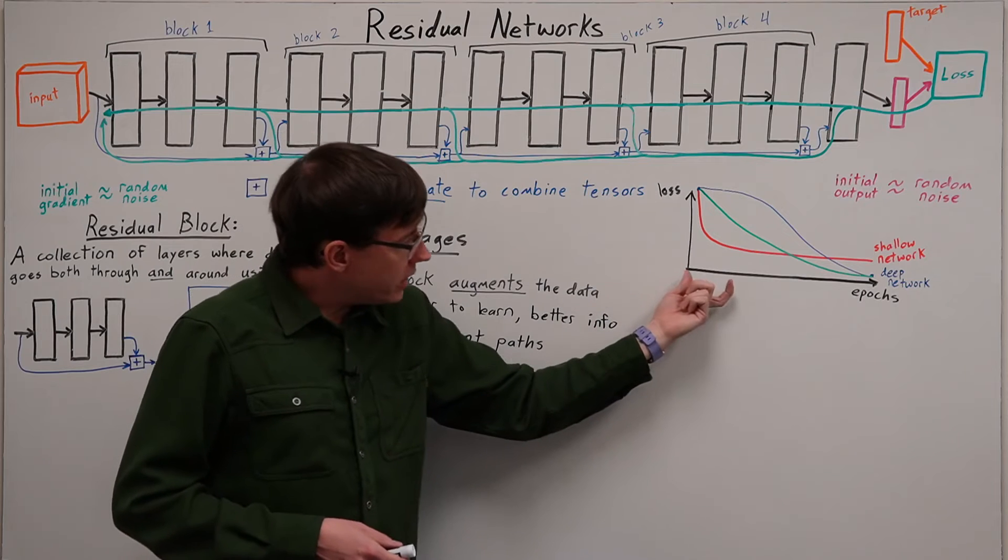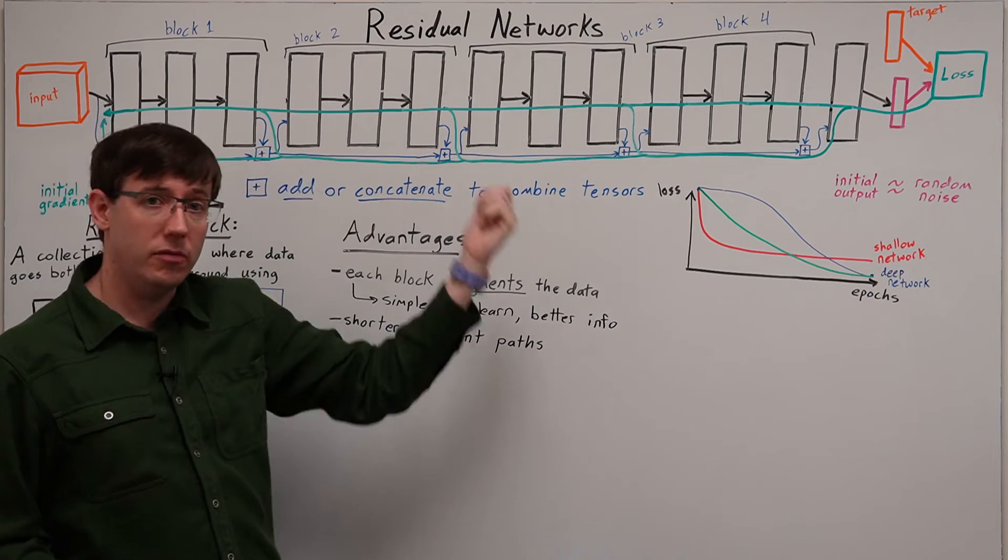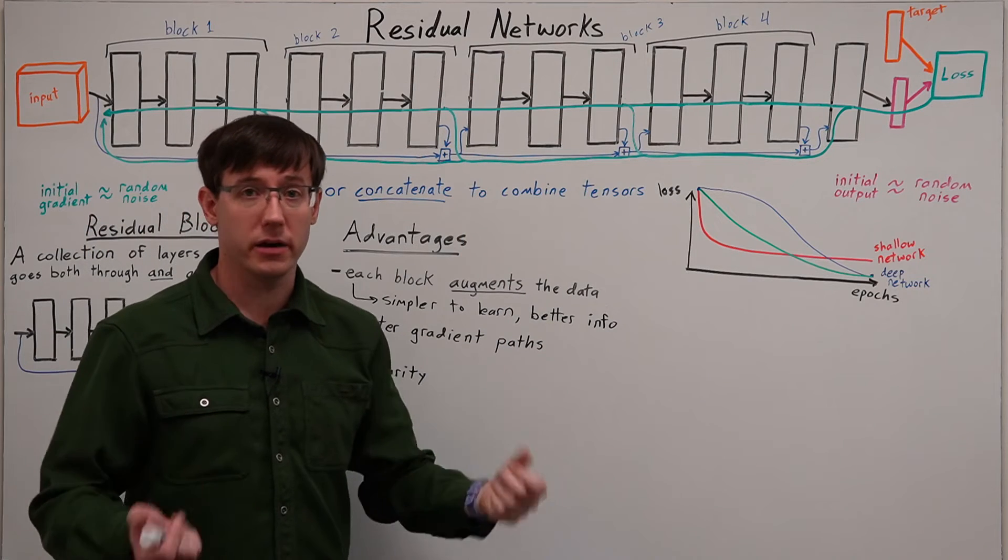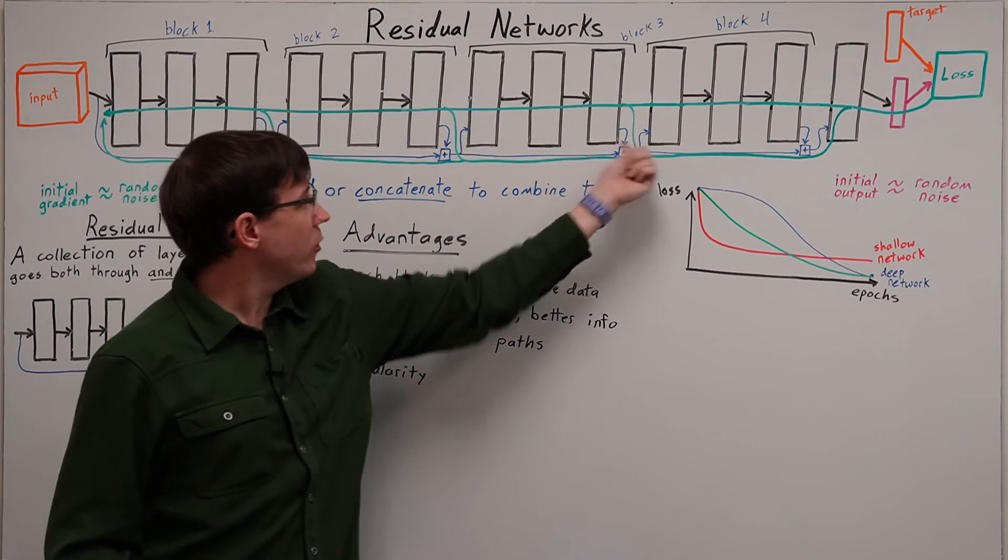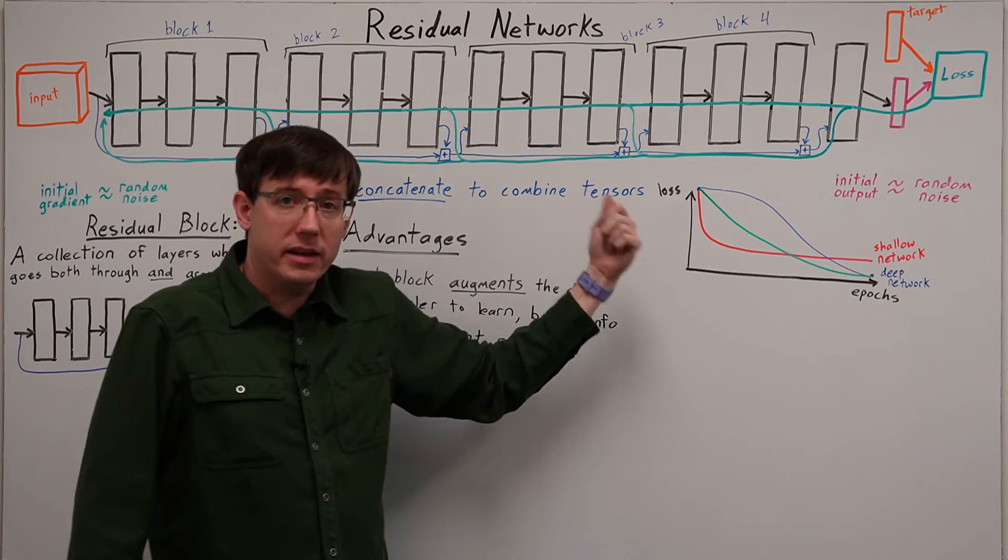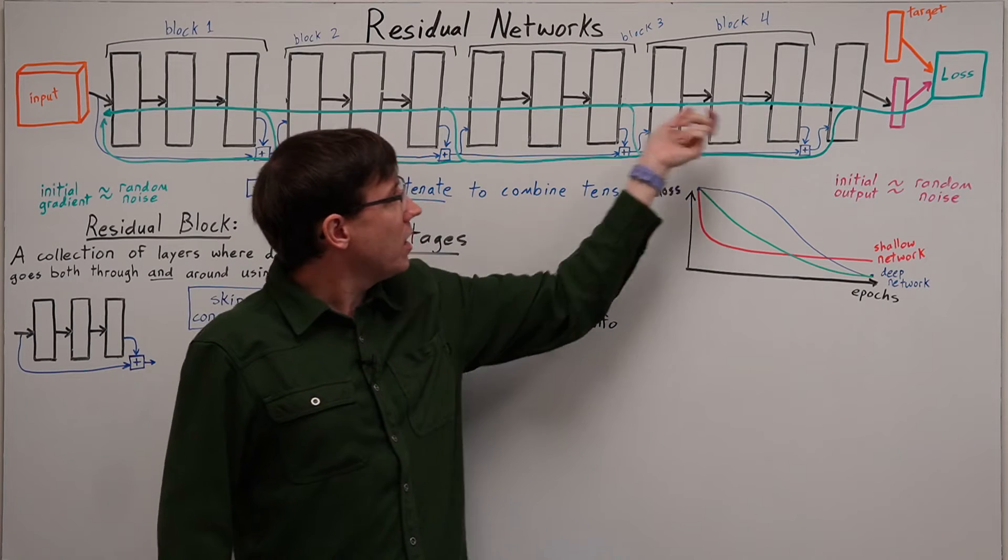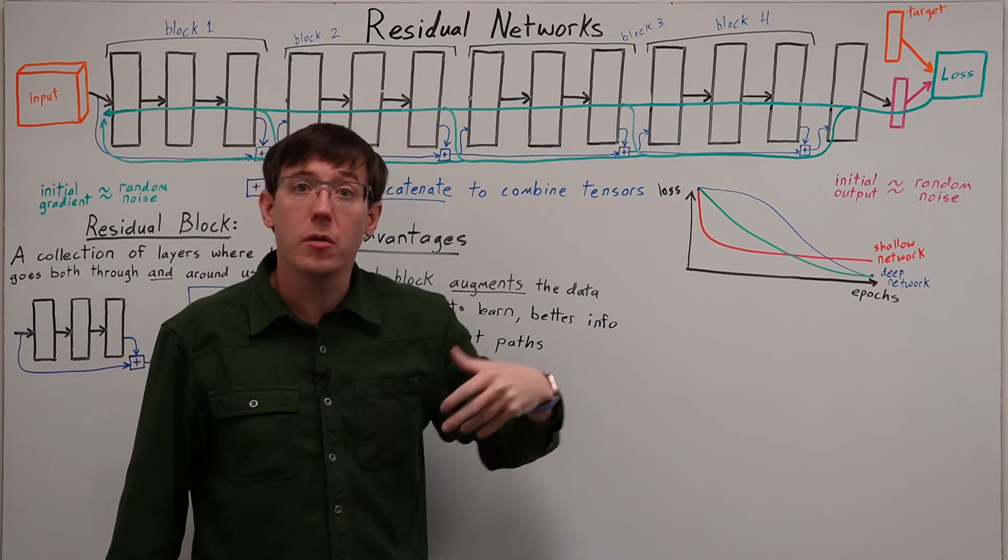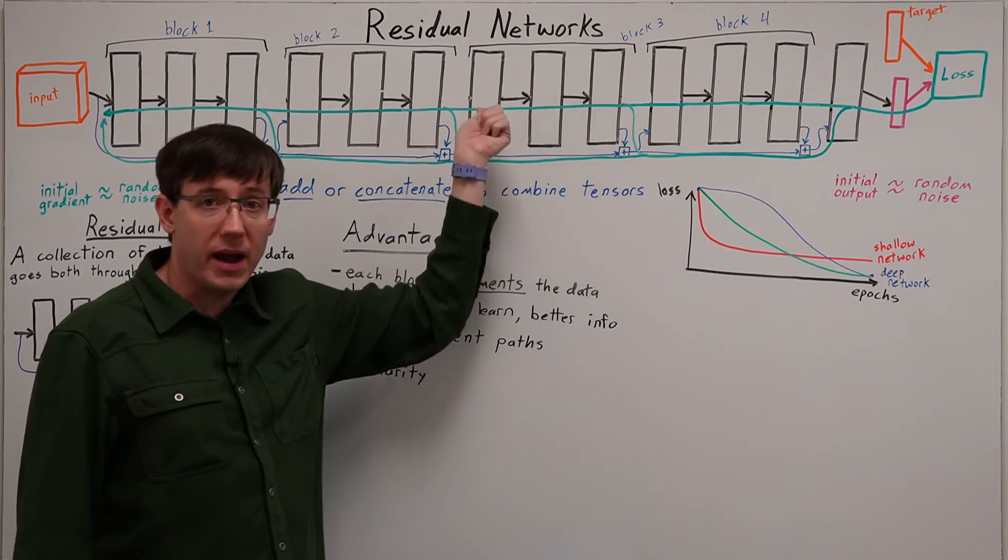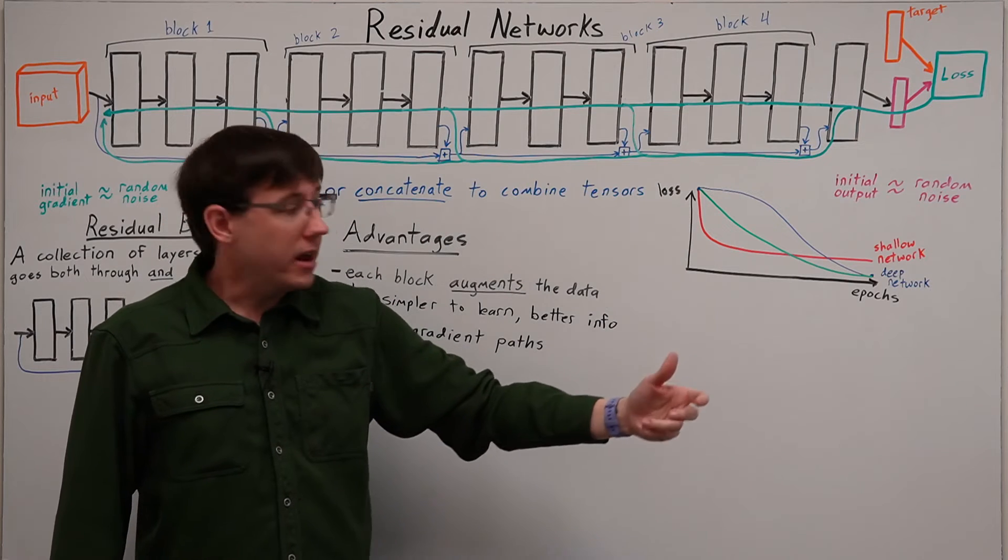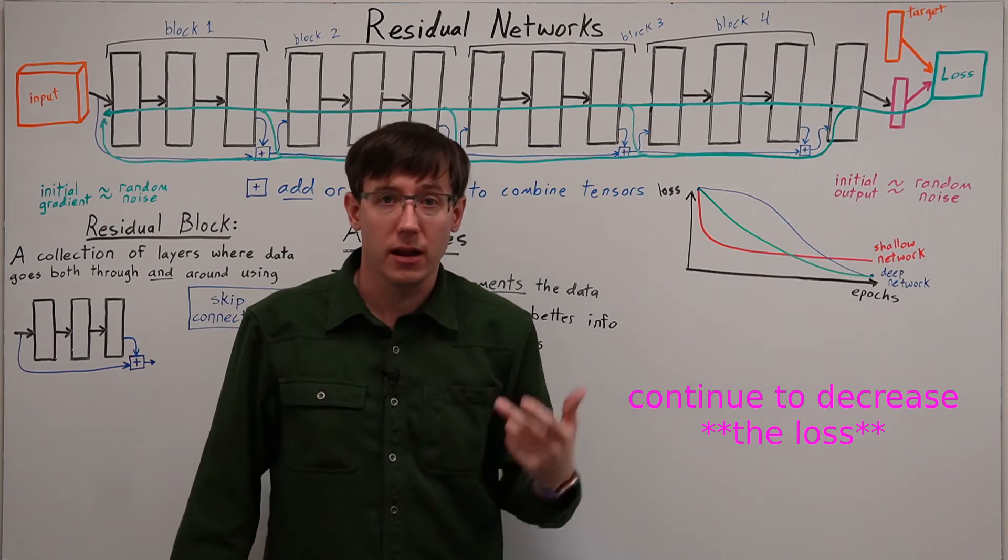And therefore, in the initial epochs of training, when the information coming along the path that goes through all of the layers is relatively uninformative, we can still get useful updates out of these shorter paths and get decreasing loss right away. Plus, over time, as the later blocks in the network start computing more and more useful functions, the information coming along this path will get more and more informative, and so our gradients can continue to decrease and outperform a shallow network.